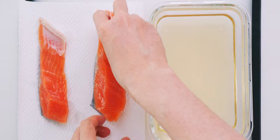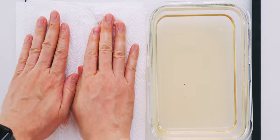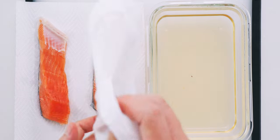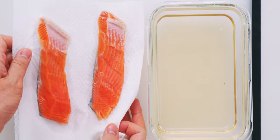If you're not going to be using them right away, you can wrap them tightly with plastic wrap and store them in the fridge for up to a few days. Or you can bag the individually wrapped salmon in a zipper bag and freeze them if you want to store them for longer.